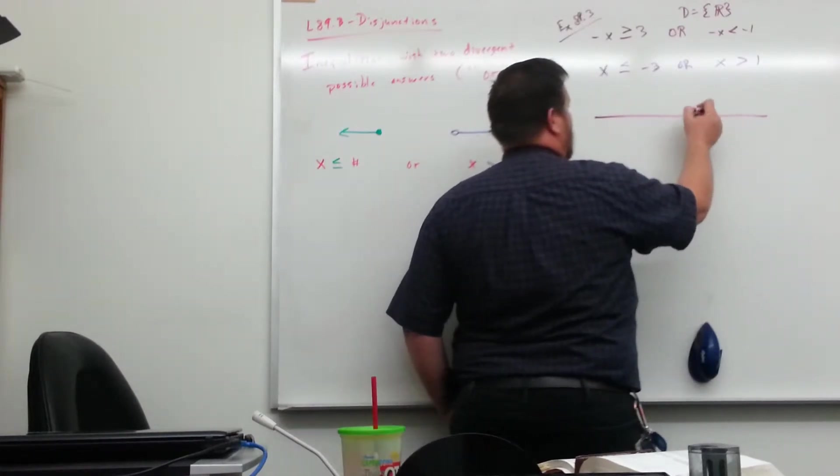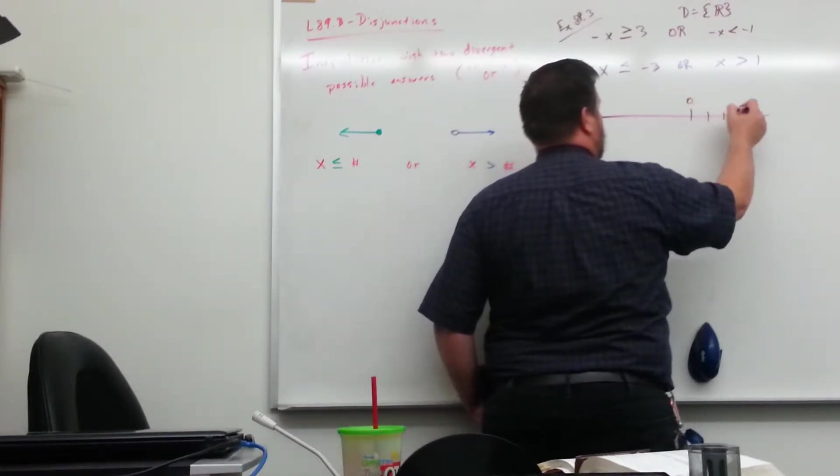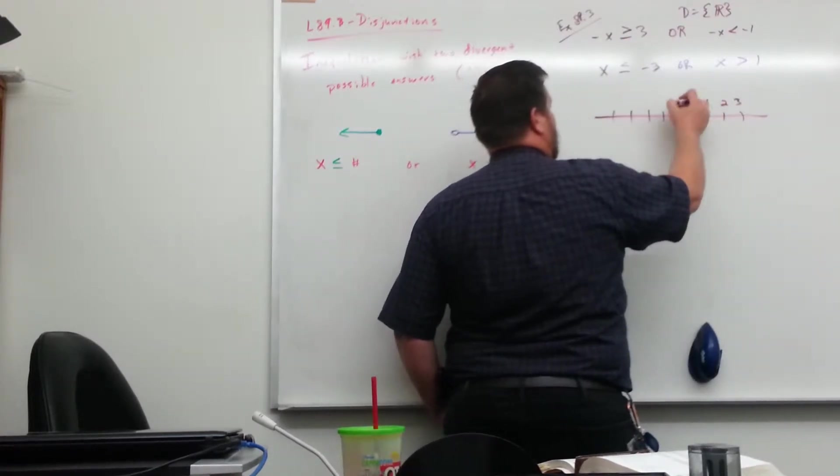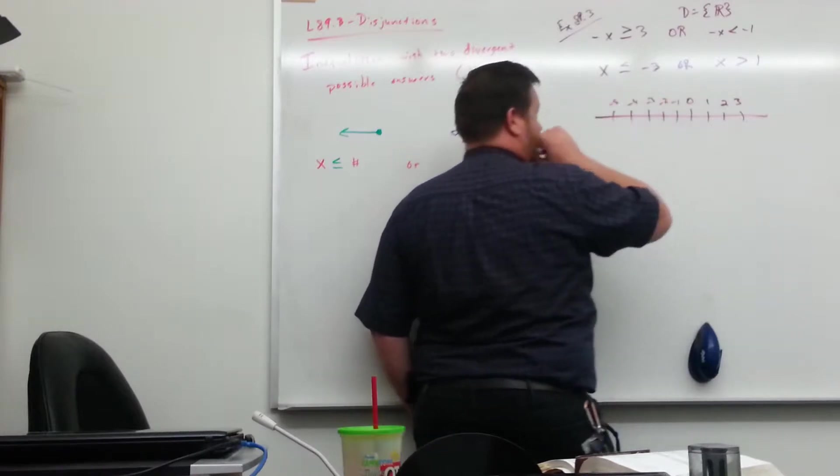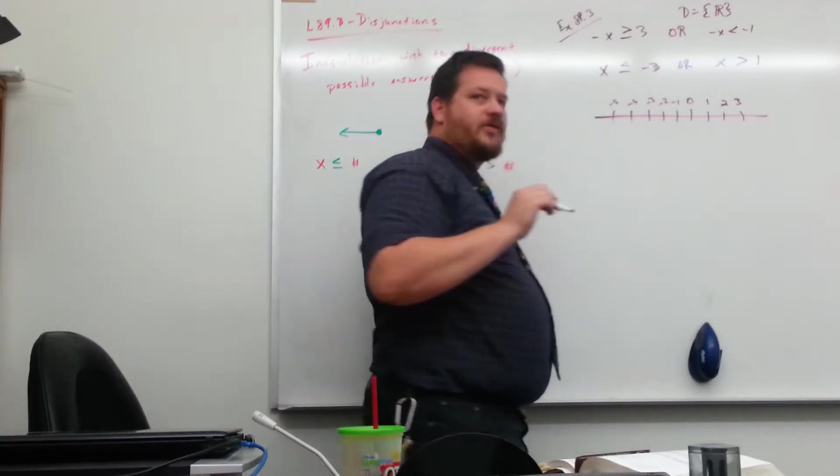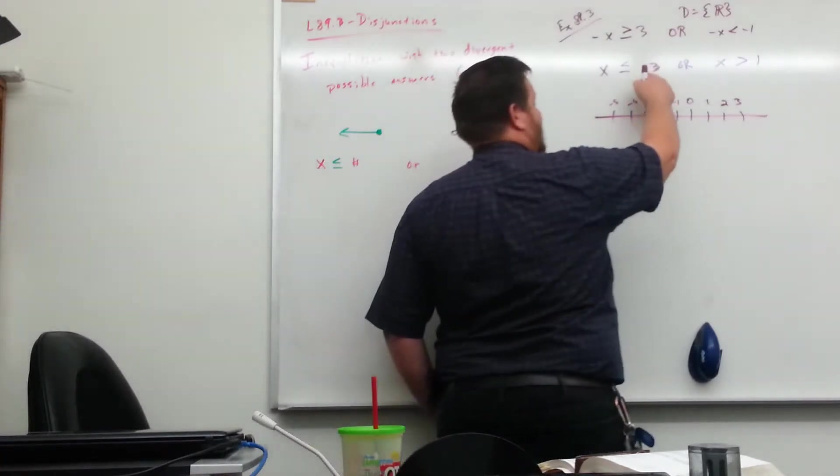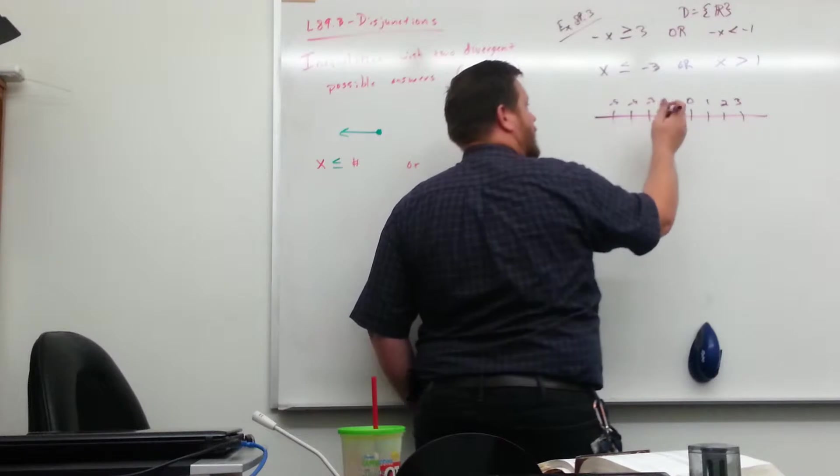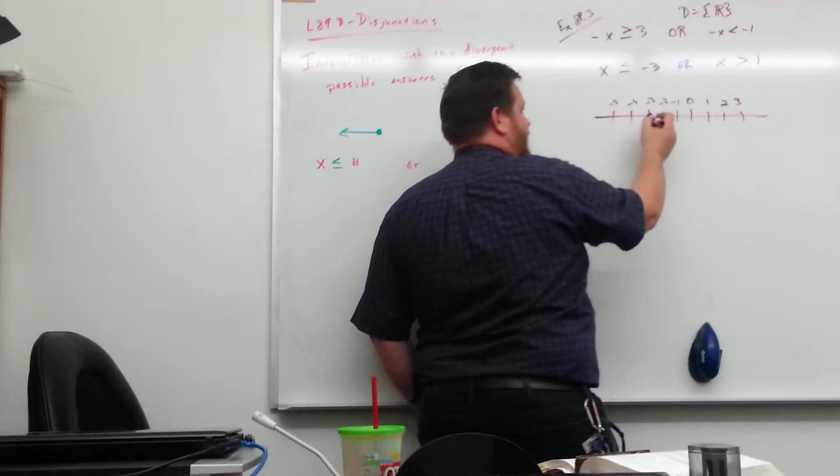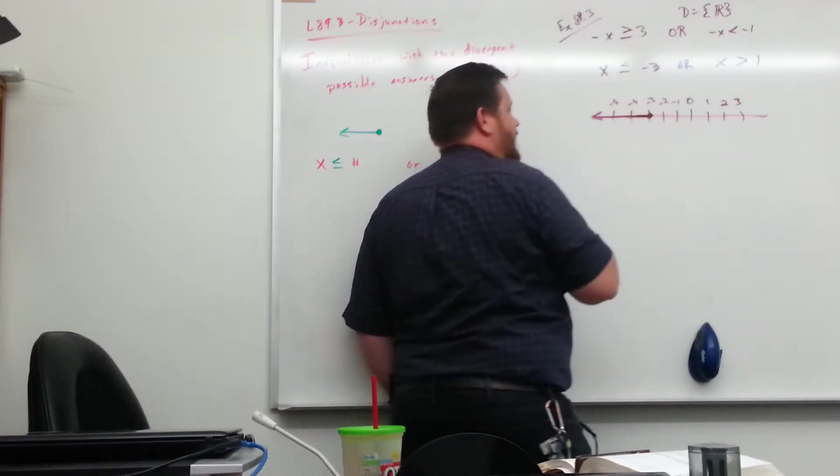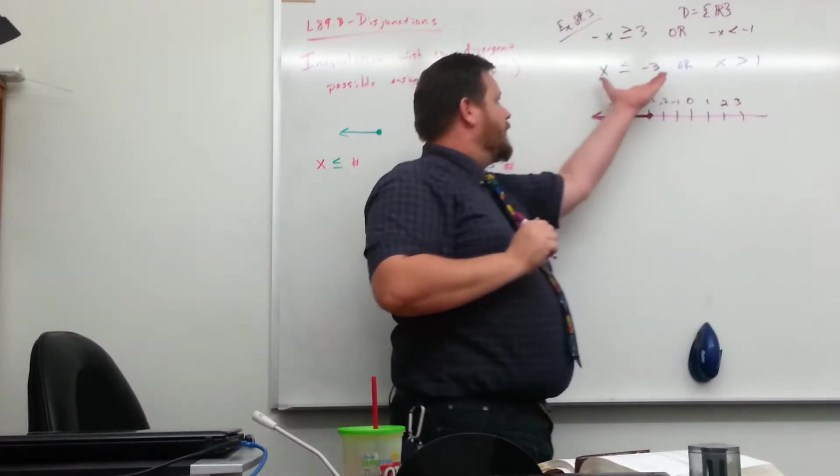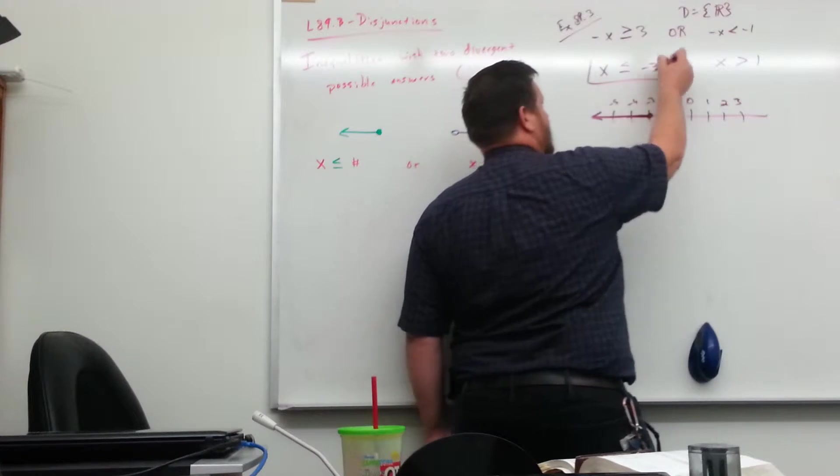So let's get a number line on here. Negative 3. Let's see, we're talking about reals. Dots or line? Line. Can x be negative 3? Yes, we're talking about reals, so I need a solid dot here, and x has to be less than that, so I need an arrow to the left. So everything to the left, everything from negative 3 and left, meets this criteria here. Right?